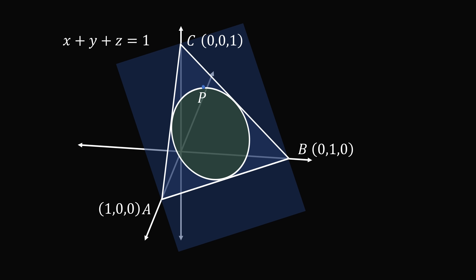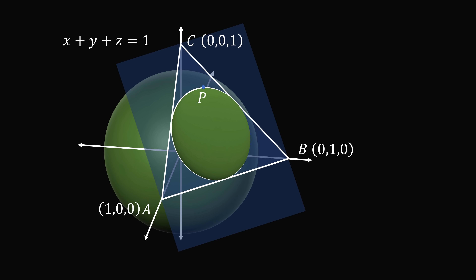Here comes the next amazing trick. What can we do about this in-circle? We will construct a sphere that intersects with this plane, and the intersection of the sphere with the plane will exactly be this in-circle. A general equation for a sphere centered at the origin is X squared plus Y squared plus Z squared equals R squared, for R being the radius.